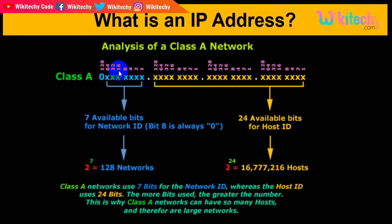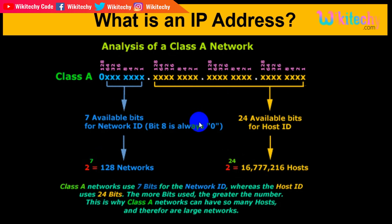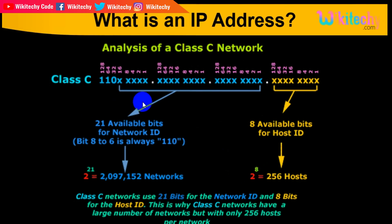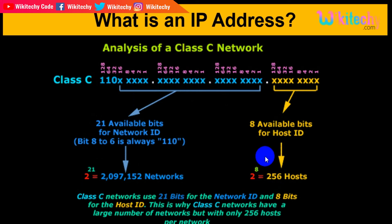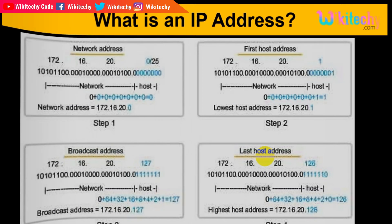For Class A analysis, there are 7 available bits that can be changed to 0s and 1s. We can make 2 to the power 7 combinations — that is 128 networks — and 2 to the power 24 combinations of host bits, giving us 16 million hosts. For Class C, we have 21 bits for 2 to the power 21 combinations — almost 2 million networks — and only 8 bits giving 256 hosts.